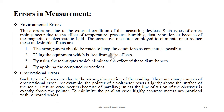Environmental errors are due to external conditions of the measuring devices, mainly occurring due to the effects of temperature, pressure, humidity, dust, vibration or magnetic and electrostatic fields. The corrective measures employed to eliminate or reduce these effects are: keeping the environment or conditions as constant as possible, using equipment that is free from these effects, using techniques that eliminate the effect of these disturbances, and applying computed corrections.